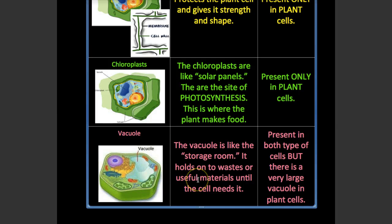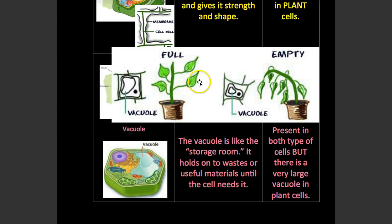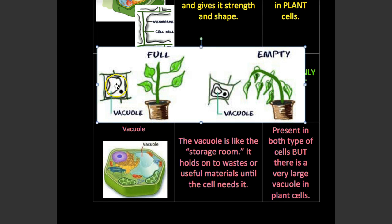The vacuole is like the storage room — it holds waste and useful materials until the plant needs them, either to get rid of or to store. There is a large central vacuole in a plant cell. Both plants and animals have vacuoles, but only plants have a large one, and it helps the plant stand upright along with the cell wall. When you don't water a plant it gets wilted because the vacuole deflates and doesn't have enough water to keep the pressure of the cell. Here you can see a vacuole full of water compared to one that's not.